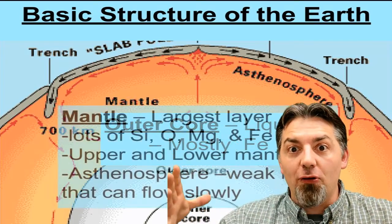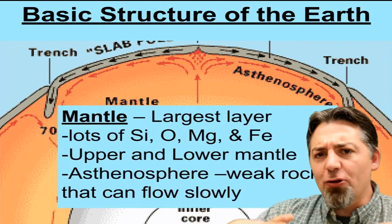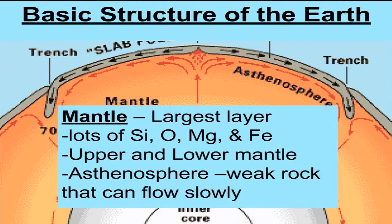And as we travel further out, we get to the mantle. Now the mantle, this is the largest layer of the Earth. In the mantle, there's lots of things like silicon and oxygen and magnesium and iron. And really, it's divided into an upper mantle and a lower mantle.